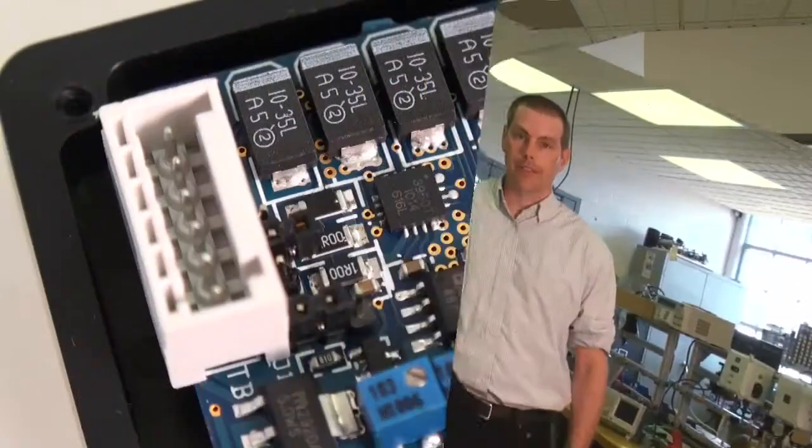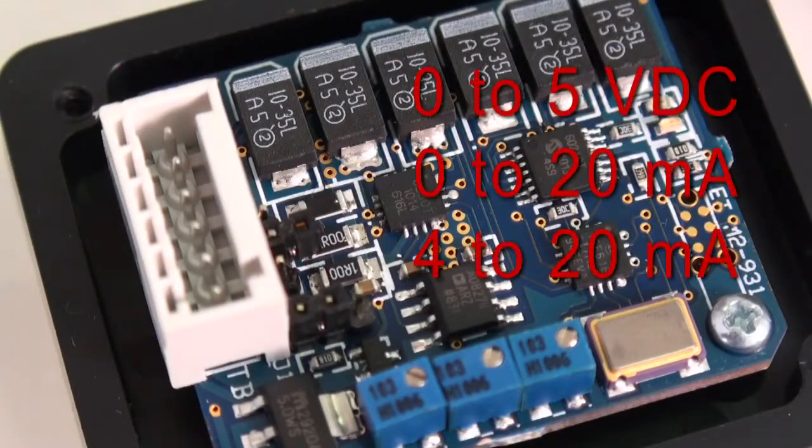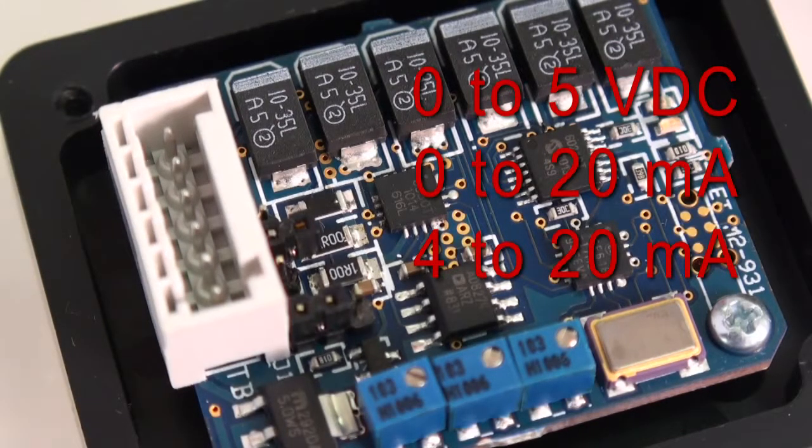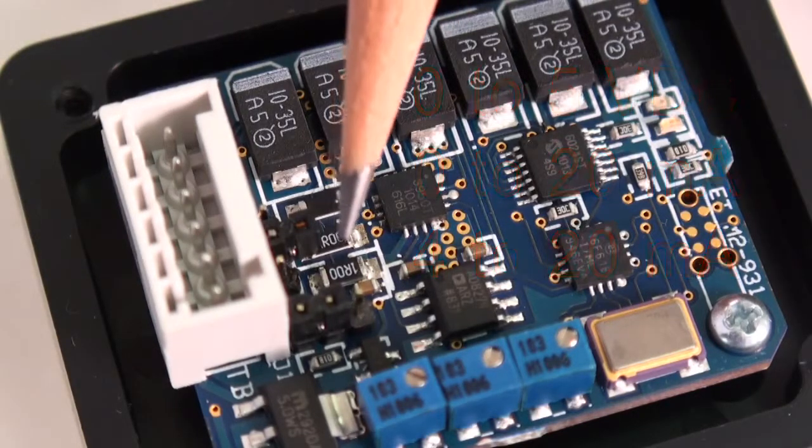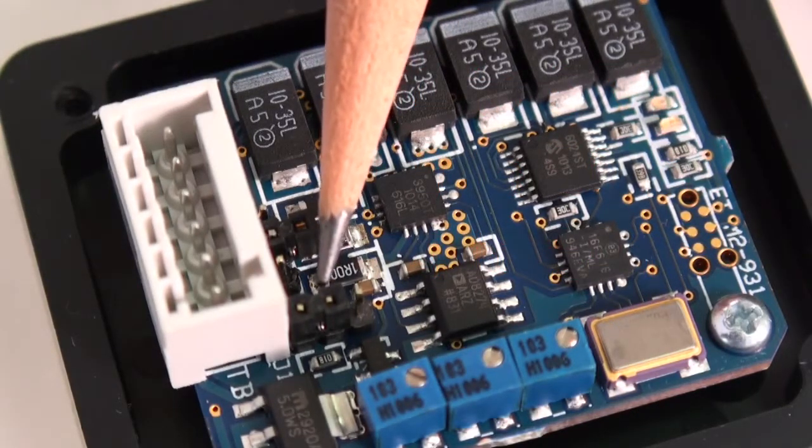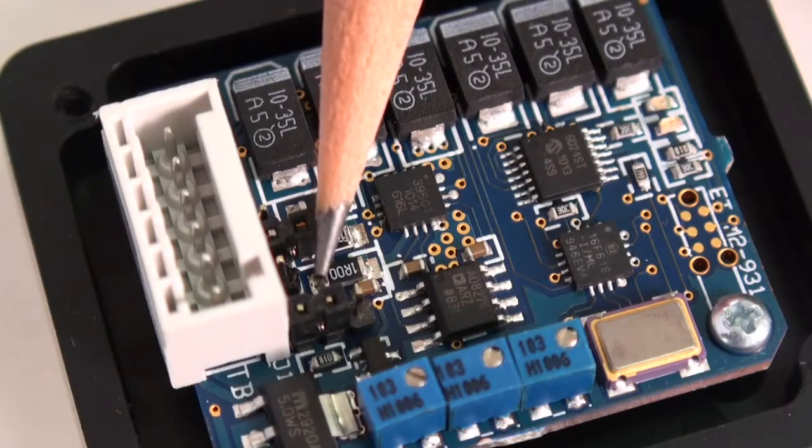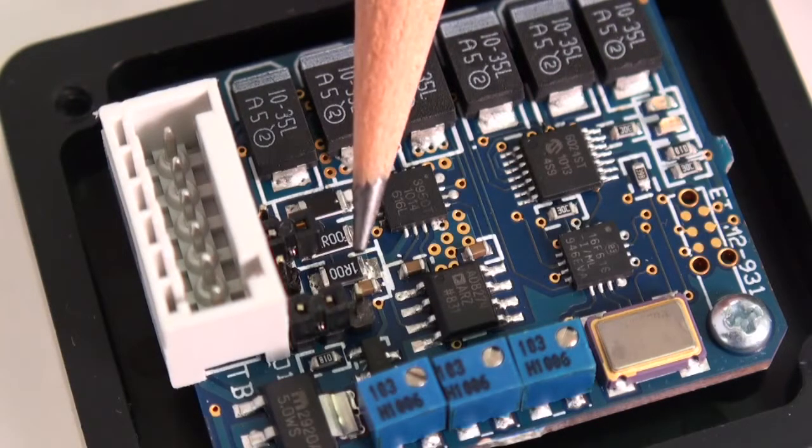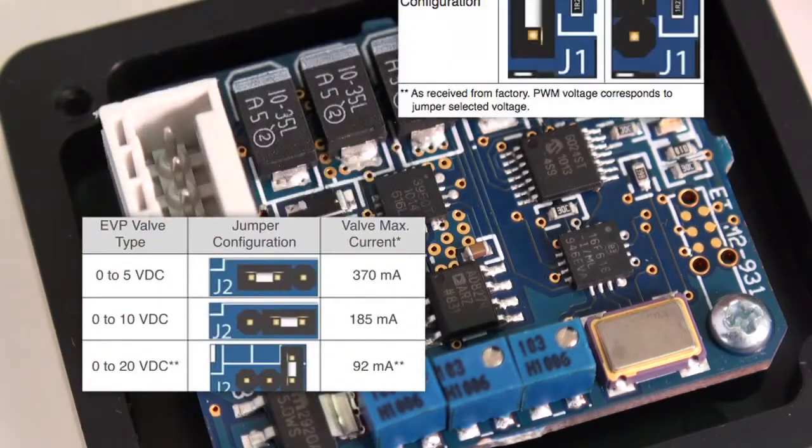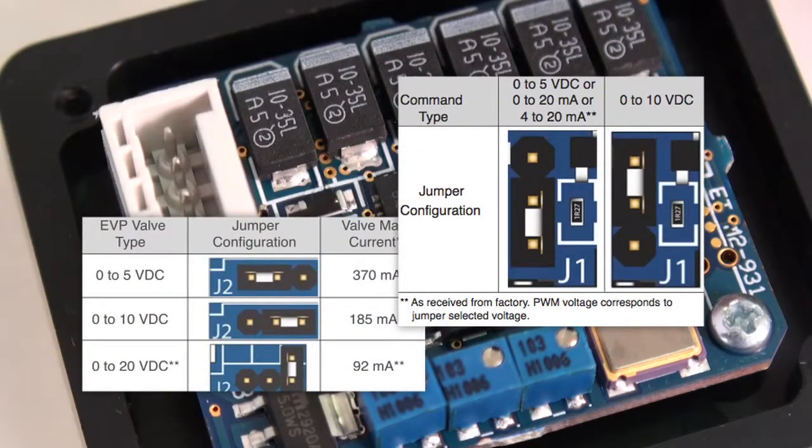And while we have the case open, let's look at the command jumper as well to see if the setting is correct for your needs. If you're using 0 to 5 volts, 0 to 20 milliamps, or 4 to 20 milliamps to control this driver, then the jumper setting for the input command signal is in the right spot from the factory. However, if you want to use 0 to 10 volts, you'll need to change that jumper. See the installation and operations manual for more information about the jumper positions.